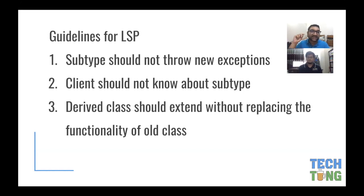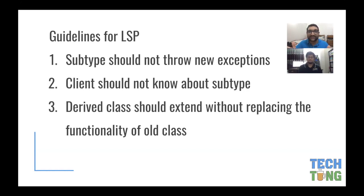The second guideline is that the client should not need to know about the subtype. The client should use the parent class. For example, if you look at a shape hierarchy — rectangle, square — the client uses the shape interface and no one needs to know the specific shape type.